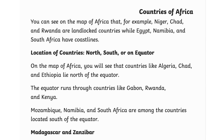Location of countries north, south, or on the equator. On the map of Africa, countries like Algeria, Chad, and Ethiopia lie north of the equator. The equator runs through countries like Gabon, Rwanda, and Kenya. Mozambique, Namibia, and South Africa are among the countries located south of the equator.